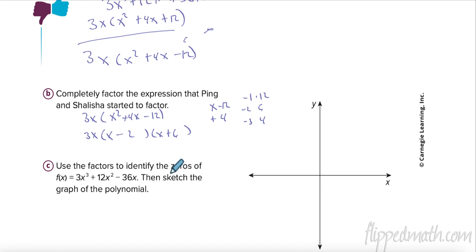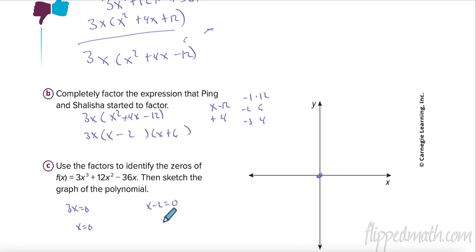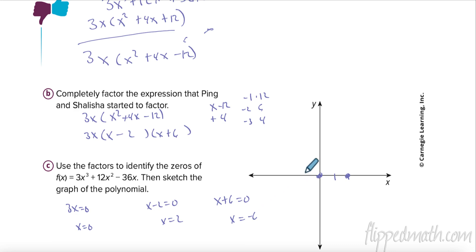Now we identify the zeros by setting each factor equal to zero. 3x = 0 gives x = 0. x - 2 = 0 gives x = 2. x + 6 = 0 gives x = negative 6.